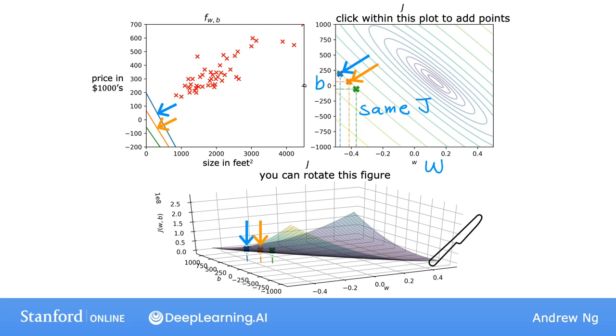and that point, and that point, all of these 3 points have the same value for the cost function j, even though they have different values for W and B.